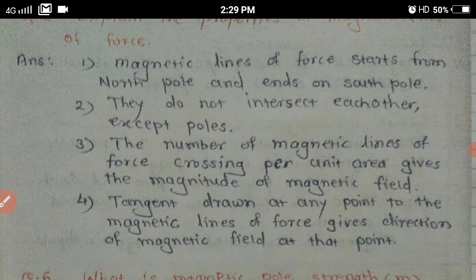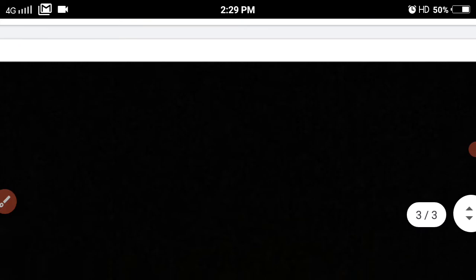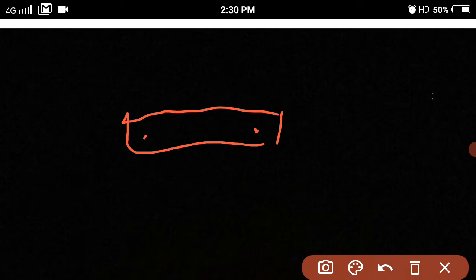Let us recall what magnetic lines of force are. In a magnetic field, when we place a magnetic needle, the path traced by the north pole of that magnetic needle gives us the magnetic lines of force.